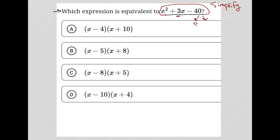Those two numbers are positive 8 and negative 5. 8 times negative 5 is negative 40, but 8 plus negative 5 is positive 3.